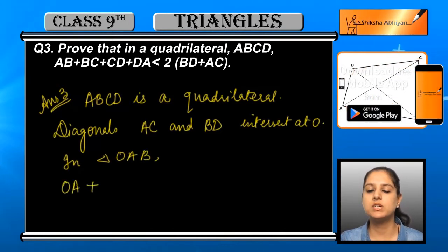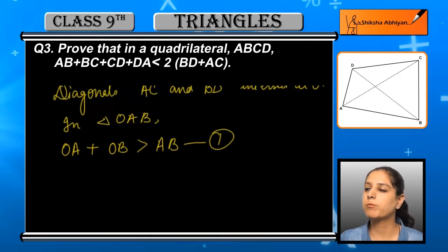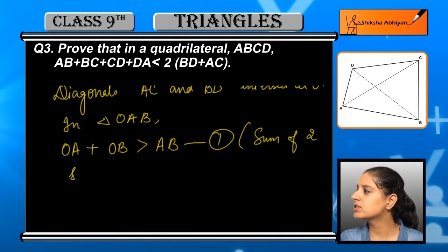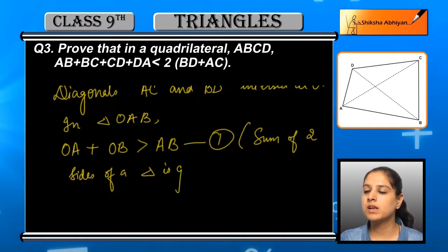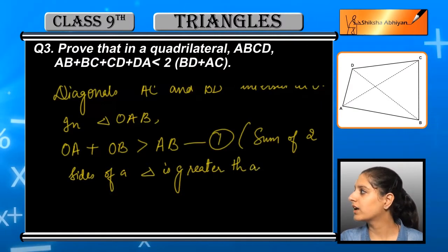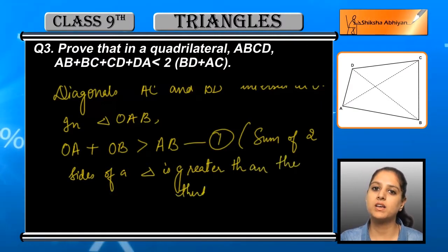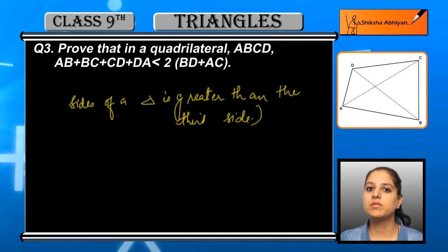AC and BD divide the quadrilateral ABCD into 4 triangles. In triangle OAB, the sum of two sides of a triangle is always greater than the third side, so OA plus OB is greater than AB. This is equation number 1. The reason is that the sum of two sides of a triangle is always greater than its third side.